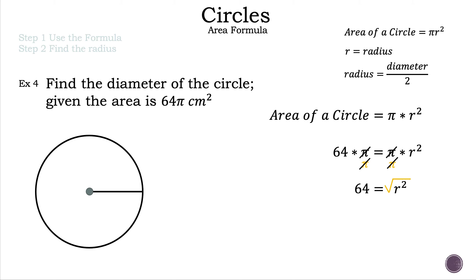We take the square root of both sides. Taking the square root of r squared leaves just r. The square root of 64 is plus or minus 8, giving 8 and negative 8. Since we can't have a negative measurement, negative 8 is rejected, so the radius is 8 centimeters.